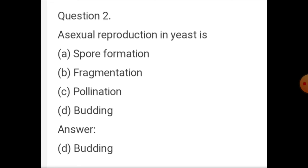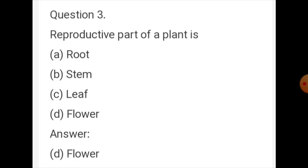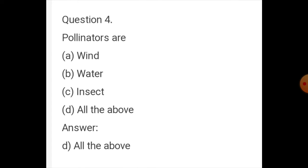Question number three: the reproductive part of a plant is — roots, stem, leaf, or flower? The correct answer is flower, because reproduction in plants occurs through the flower.